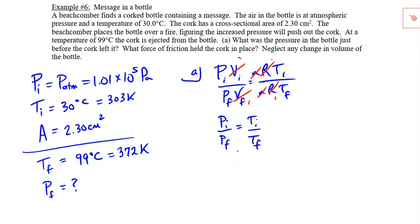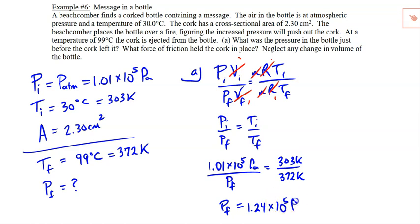So pressure initially would be the atmospheric pressure, I'm assuming. So 1.01 to the power of 5 all over pressure final equals 303 Kelvin all over 372 Kelvin. And if we rearrange and solve, I will get an answer of 1.24 times 10 to the power of 5 pascals.